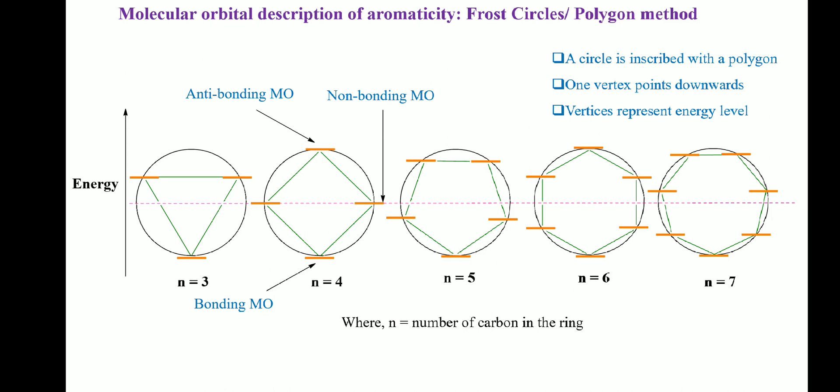Now we come to the molecular orbital description of aromaticity. The energy level diagram of molecular orbitals resulting from the combination of any regular cyclic arrangement of pi orbitals can be deduced from an appropriately sized polygon. This trick is called the Frost circle, or sometimes the polygon method. A circle is inscribed with a polygon with one vertex pointing downward. The vertices represent energy levels. The horizontal diameter represents the energy level of the non-bonding molecular orbitals. All molecular orbitals below this line are bonding, while all those above are anti-bonding.